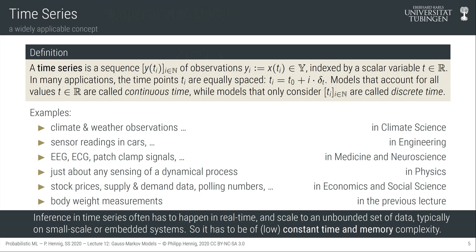A time series is a sequence of observations indexed by a scalar variable we'll call time — it doesn't have to be physical time, but of course often is. We typically move forward through that sequence. Temporal structure is often associated with constant step size, but doesn't have to be. In principle time is continuous, but often in practical applications it is discretized into individual time steps — these models are called discrete time models.